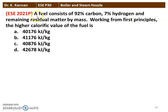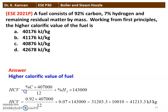Next question from the 2021 question paper: a fuel consists of 92% carbon, 7% hydrogen, and remaining residual matter by mass. Working from first principles, calculate the higher calorific value of the fuel. HCV = (percentage of carbon × 407,000 / 12) + (percentage of hydrogen × 143,000). Substituting: (0.92 × 407,000 / 12) + (0.07 × 143,000) = 31,203.3 + 10,010 = 41,213.3 kJ/kg. The closest answer is 41,176 kJ/kg, which is the calorific value of the fuel.